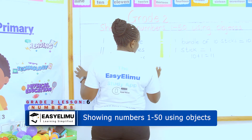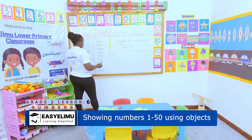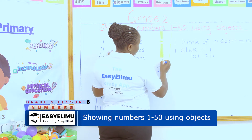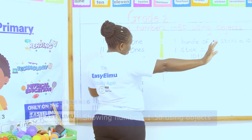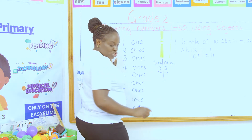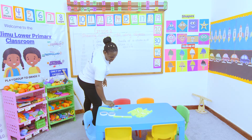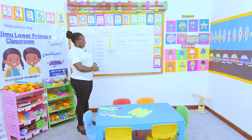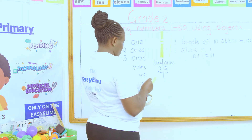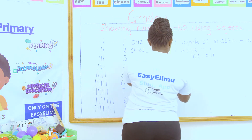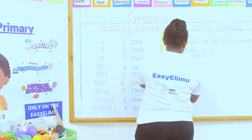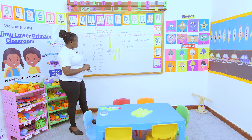I have been told to show number 23. Let's use the place value. The ones are on the right side and the tens are on the left side. So I'm told to show number 23 using bundles of sticks. How many tens do I have? I have two bundles of ten sticks.